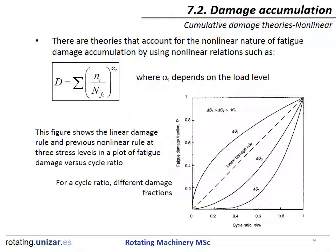There are theories that account for the non-linear nature of fatigue damage accumulation by using non-linear relations, such as the one shown on the slide, where alpha depends on the load level. This figure shows the linear damage rule and a non-linear rule at three stress levels in a plot of fatigue damage versus cycle ratio. For a given cycle ratio, different damage fractions are produced depending on the value of alpha.